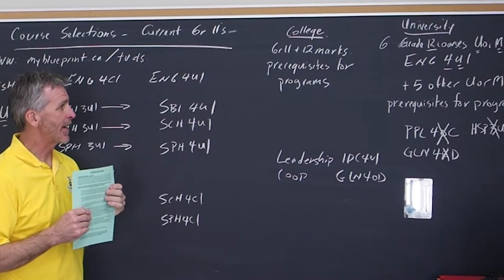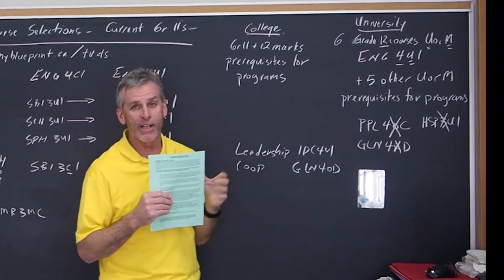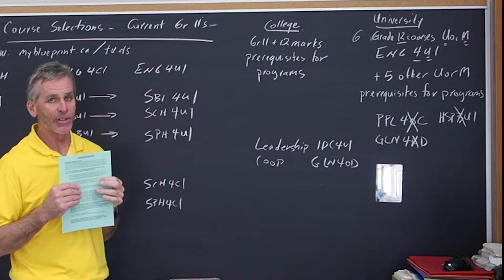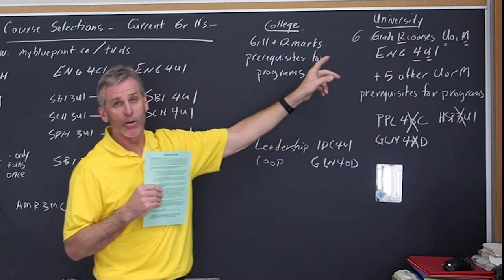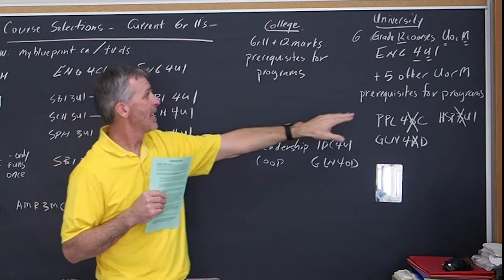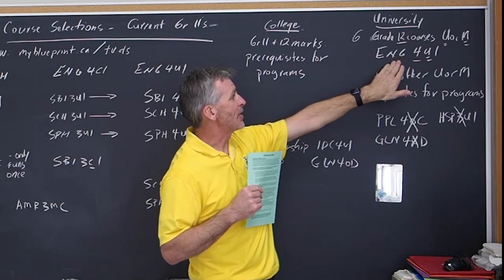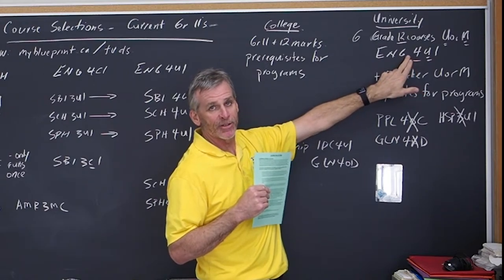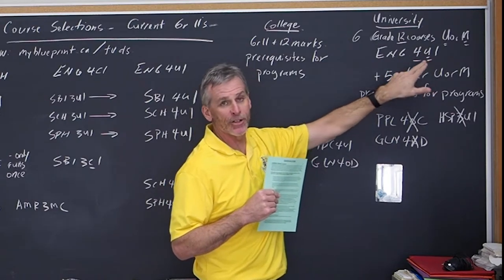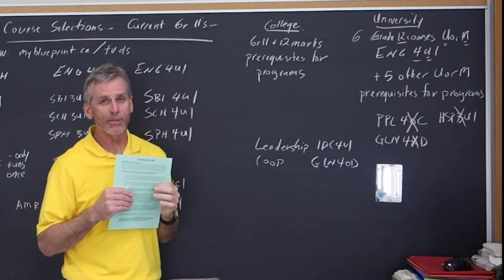If I'm looking at a university career, they're going to take your six courses that you need in order to apply to university. They all have to be grade 12, and they have to be university or university/college level courses. An example is English. The fourth character is a four. That represents the grade level. That stands for grade 12. And the fifth character is a U. So it must be a U or M to apply to university.